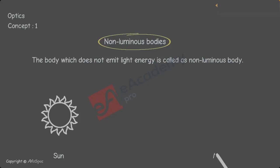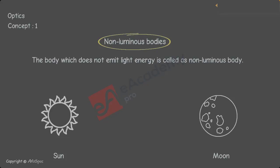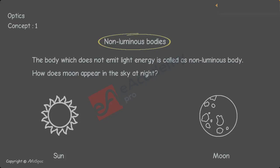These non-luminous bodies will absorb the light energy from self-luminous bodies and they will shine. For example, the Moon. Moon is a non-luminous body, but how does it appear in the sky at night? During daylight, some light energy from the Sun is absorbed by the Moon, and due to that light energy, the Moon is visible to us.